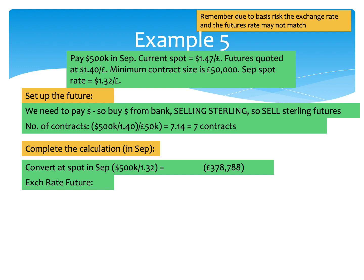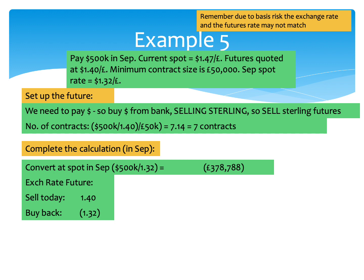What we then have is our exchange rate future. We always look at one future at a time. We decided we were going to start our hedge off by selling sterling futures today at $1.40 — the September futures price. In theory, the value of the future will change in line with the exchange rate. So if the September exchange rate is $1.32, then when we buy them back to close the hedge out, we'll be buying them back for $1.32. That means we've sold for slightly more than we bought back, giving us a gain of $0.08.